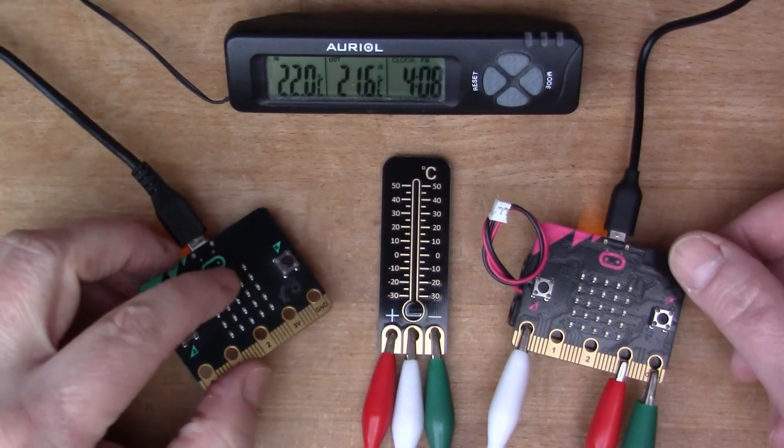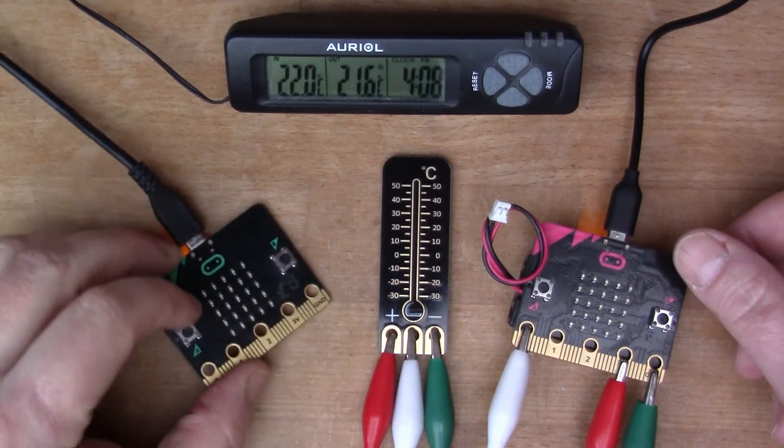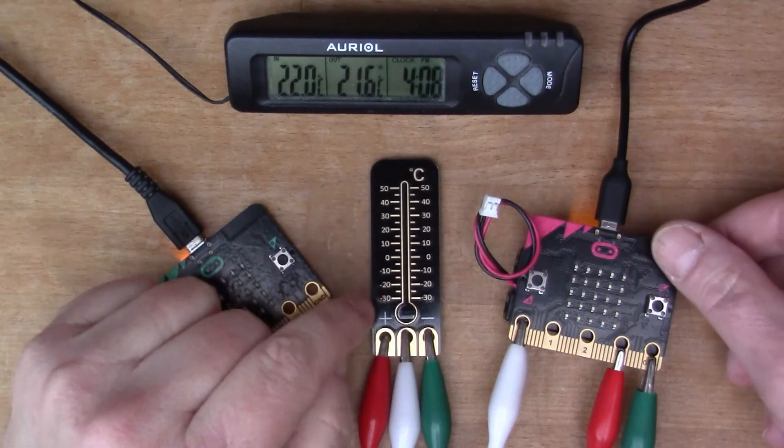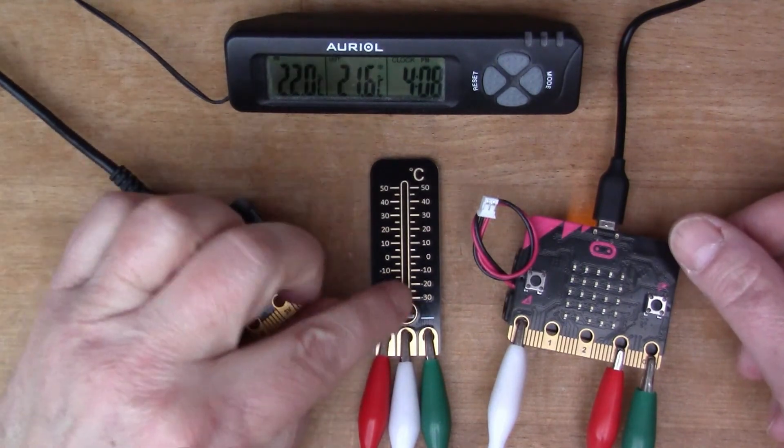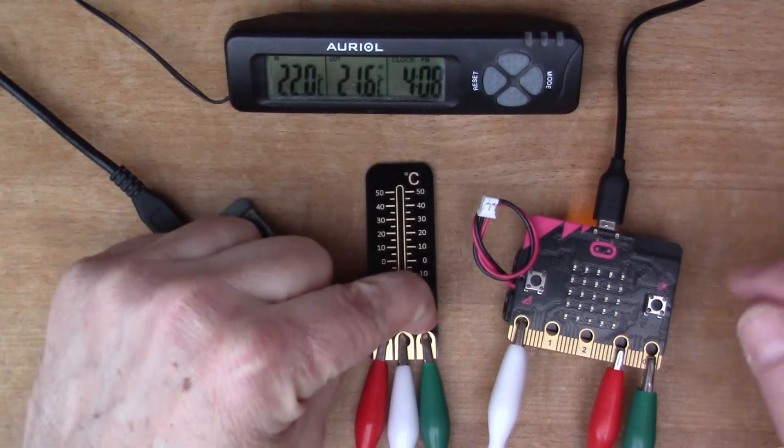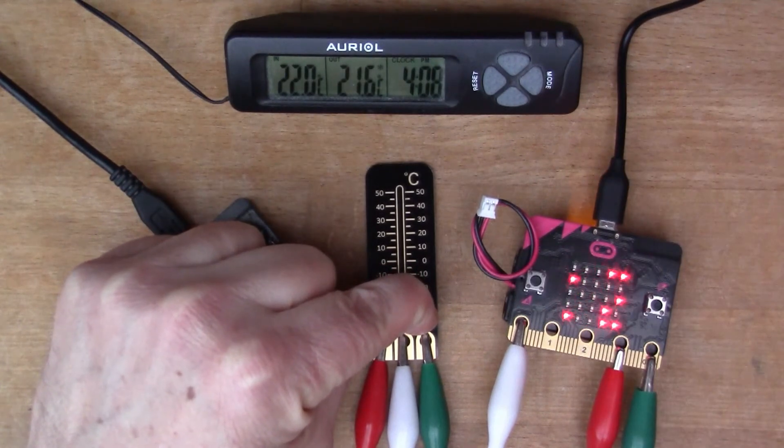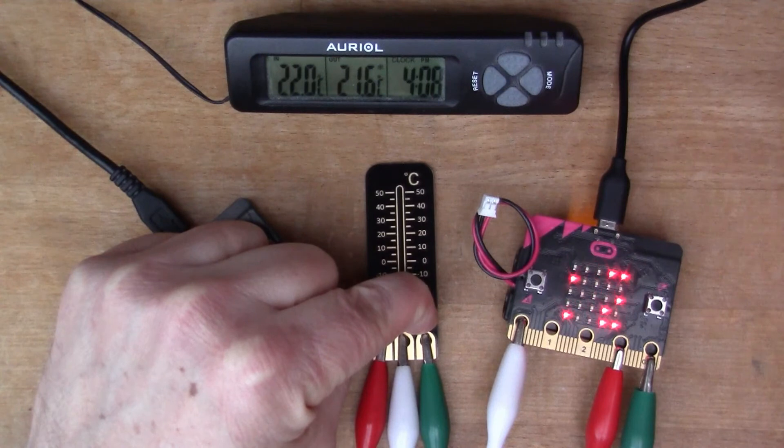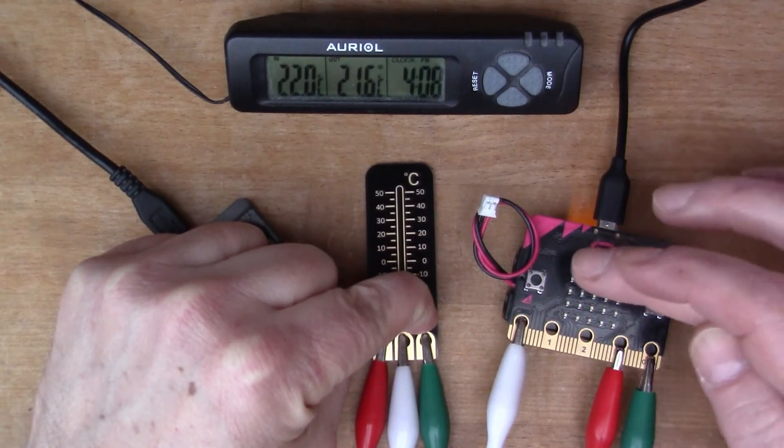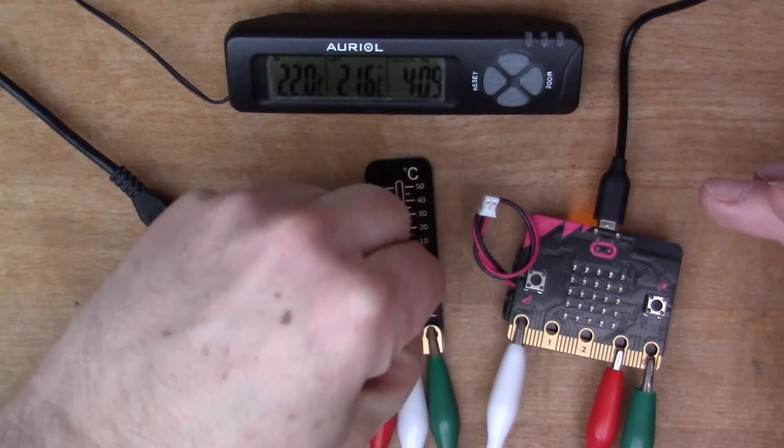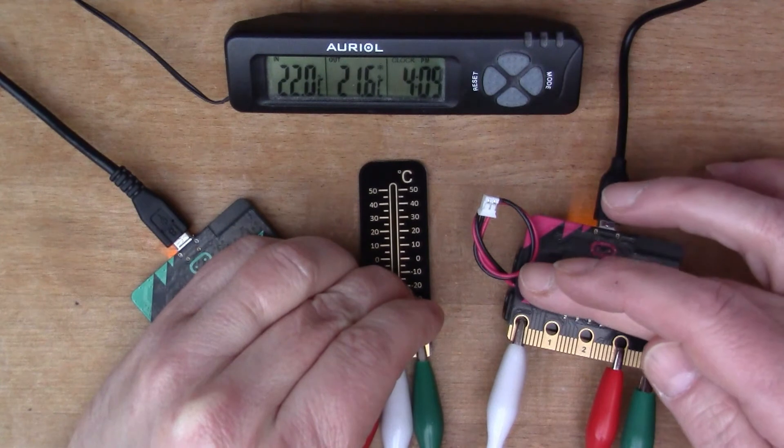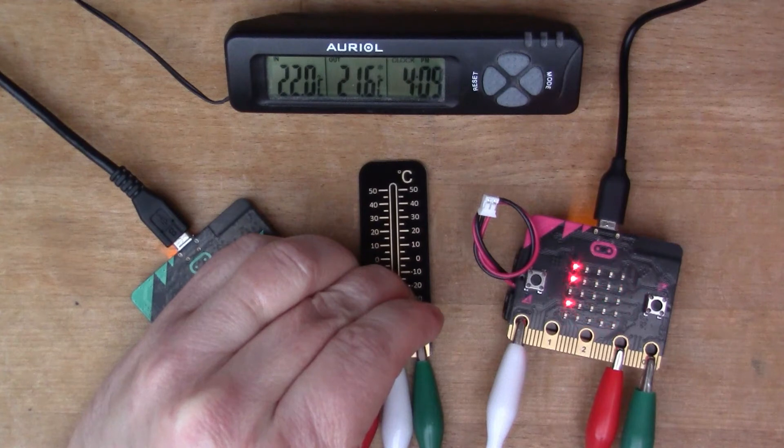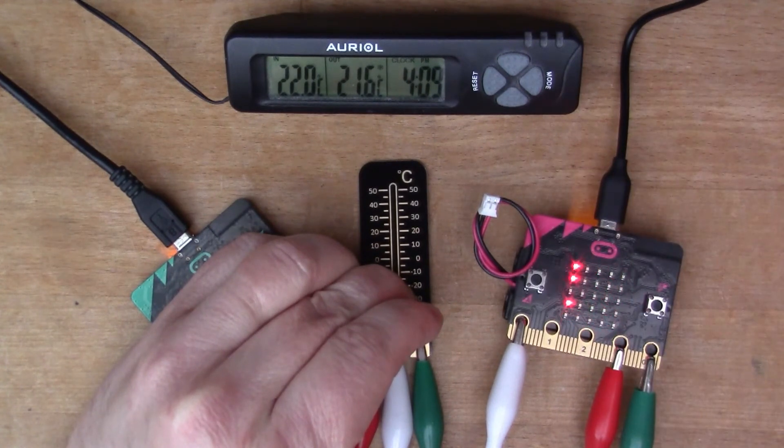On the face of it, the internal sensor is actually just as accurate as the TMP36 and the external board. I can demonstrate if I hold onto the sensor here I should be able to warm it up. Let's see if I can change the temperature—still reading 22 at the moment. Trying to warm up the face of the device.